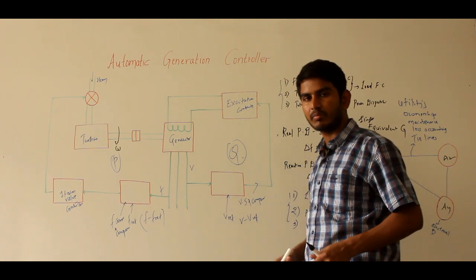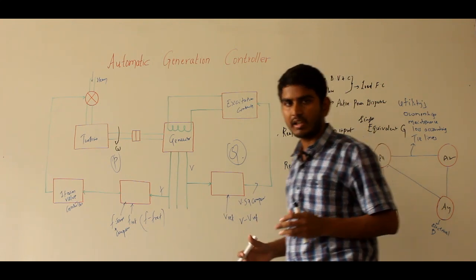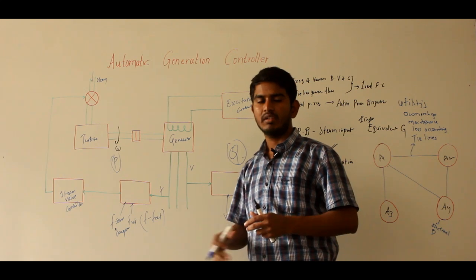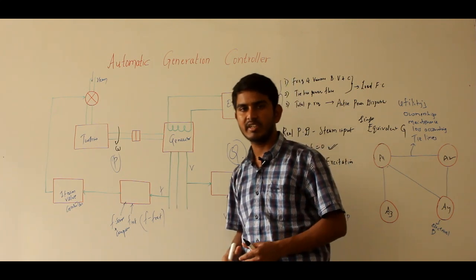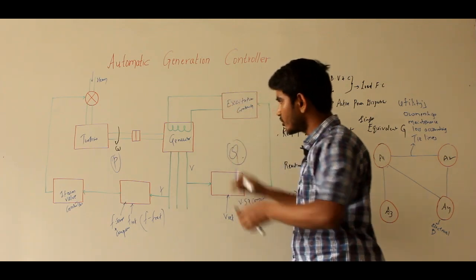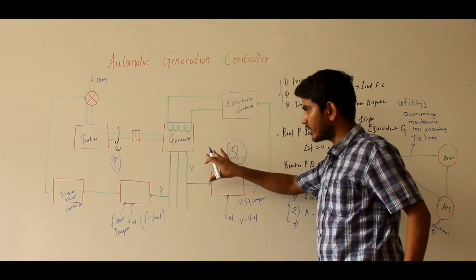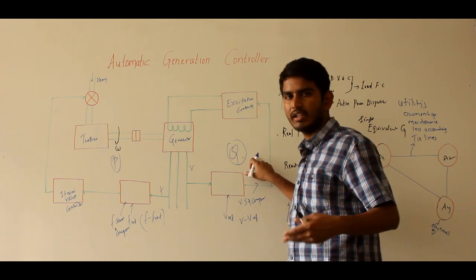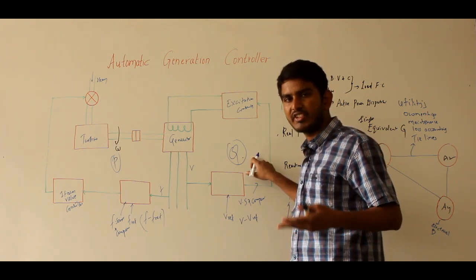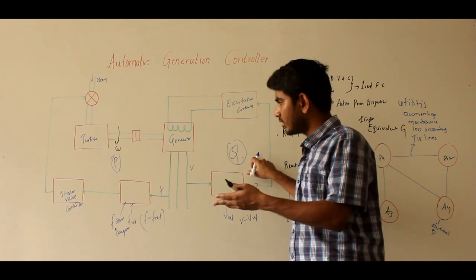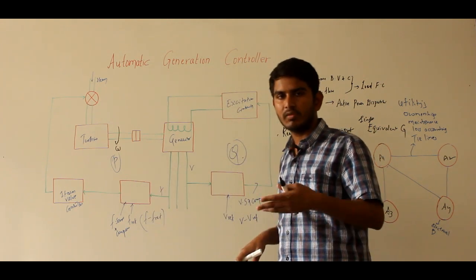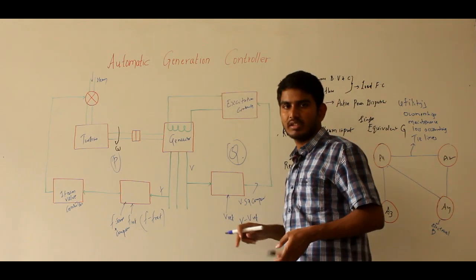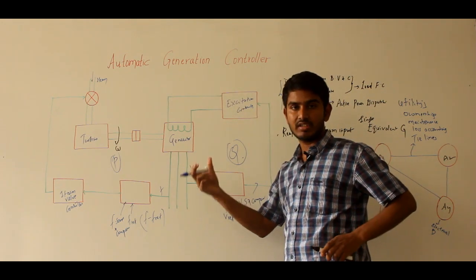In the beginning, the controllers are set for some particular operating conditions and they will take care of small load changes without changing the voltage and frequency beyond prescribed limits. But with increasing load demand, the controllers must be reset manually or automatically. In a modern interconnected large-scale power system, it is not feasible to control all these things manually. That is why we are going for the automatic generation and excitation voltage controller — that is why we have given the name automatic generation controller.